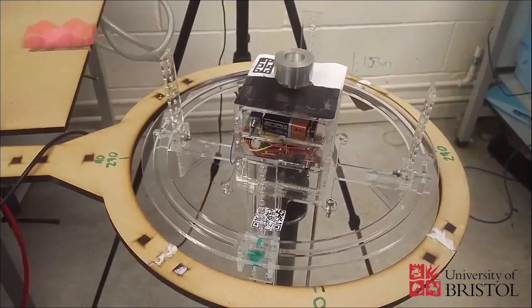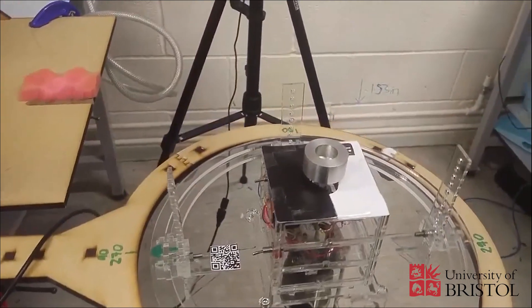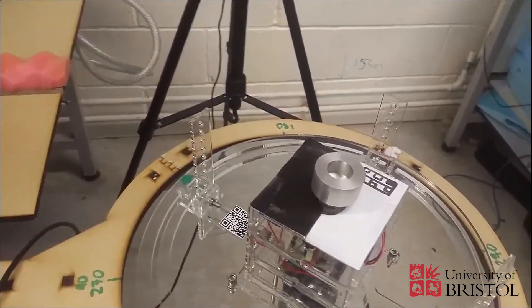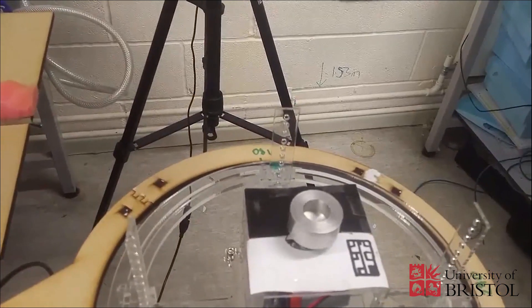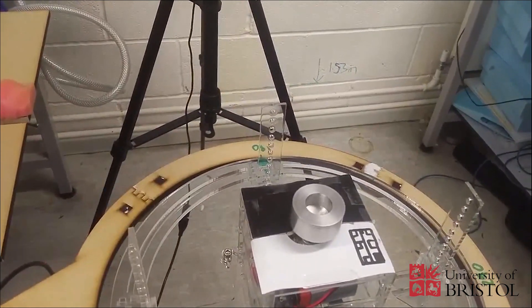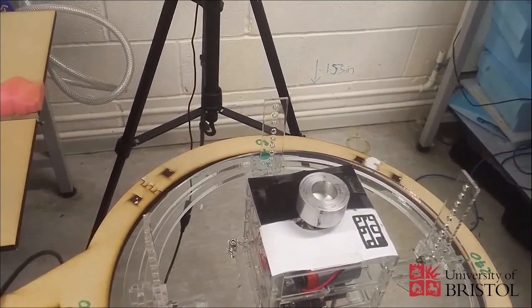This is the University of Bristol air bearing testbed with a simple reaction wheel. It has been instructed to move the system by 180 degrees. It can be seen that the system passes 180 degrees and the reaction wheel compensates that by spinning in a different direction.